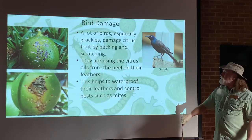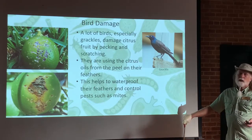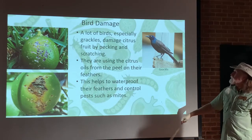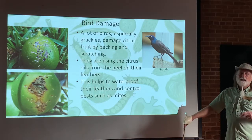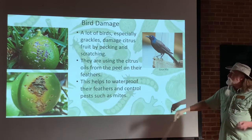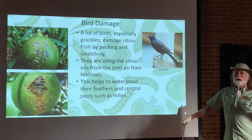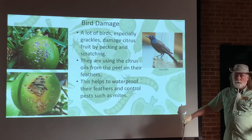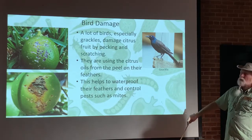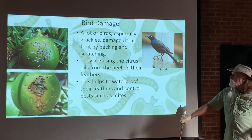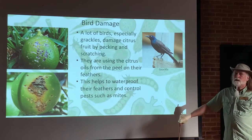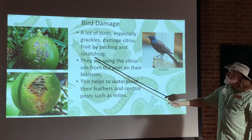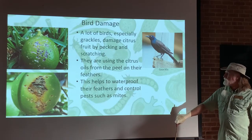Grackles very commonly damage the fruit by pecking and scratching it. You might think: why are those birds doing it to my citrus fruit? It's not because they're trying to eat the fruit. What they're doing is using the citrus oils that are in high concentration in the fruit skin, putting those oils on their feathers to make them more waterproof. The citrus oils also help to keep down pests on the birds, keeping mites and other insects off their feathers.